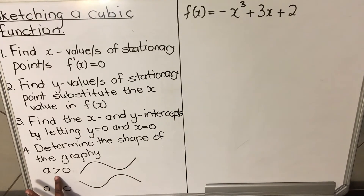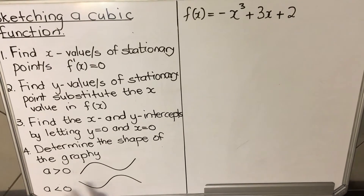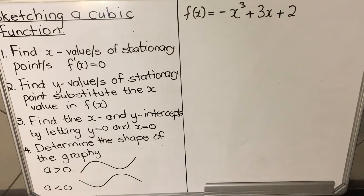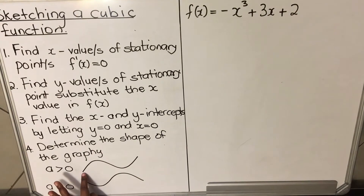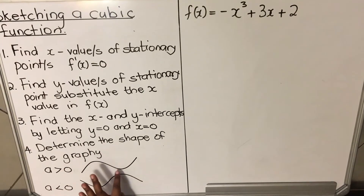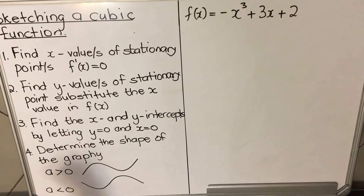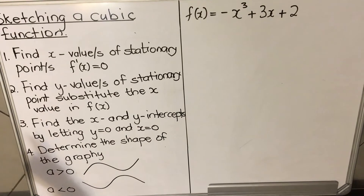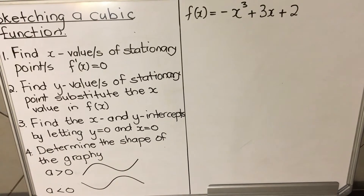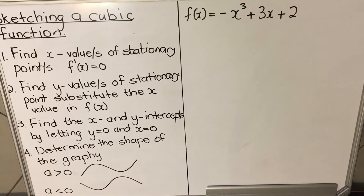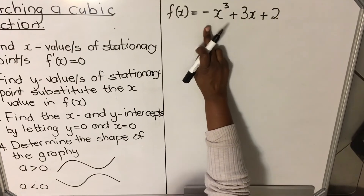The last step is to determine the shape of the graph. The shape depends on 'a', the coefficient of x cubed. If a is positive, your graph starts down and goes up. If a is negative, your graph starts up, goes down, then up again. Let's look at an example.